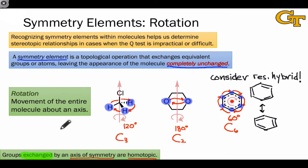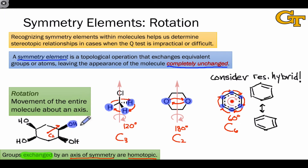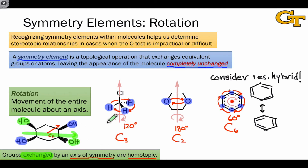Merely having a rotational axis of symmetry doesn't necessarily mean that a given pair of groups have a homotopic relationship. It's critical that the rotational axis actually exchange the two groups. Consider the molecule shown here, which possesses a C2 axis of rotational symmetry pointing out of the plane of the screen. This axis exchanges this hydroxyl group with this hydroxyl group and separately exchanges this hydroxyl group with this one. The green hydroxyls have a homotopic relationship with each other, and the blue hydroxyls have a homotopic relationship with each other because they're exchanged by this axis of rotation. However, the green and blue hydroxyls on either side cannot be exchanged by a rotational symmetry axis. Trying to flip the molecule over to move the green hydroxyl into the blue hydroxyl and vice versa won't work — that's not a symmetry element of the molecule. In order to conclude that a pair of groups are homotopic, they have to be exchanged by the axis of symmetry, meaning they have to be moved into each other as a result of the symmetry operation.